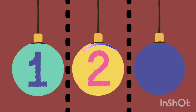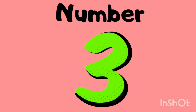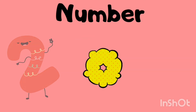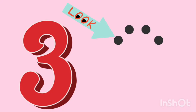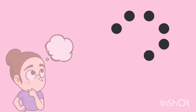Now that we have done number one and number two, which number comes after number two? It's number three! Number three comes after number two. Let's see how we make number three. This is how we make number three — it is half around and...